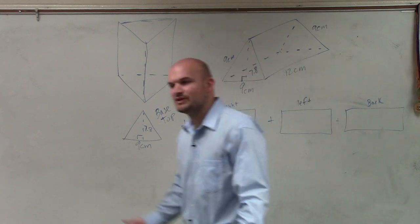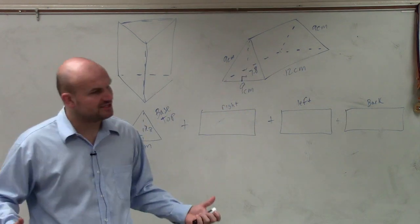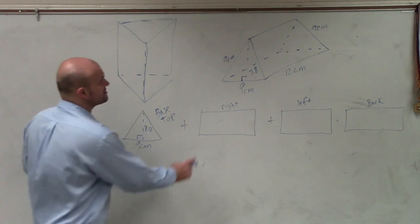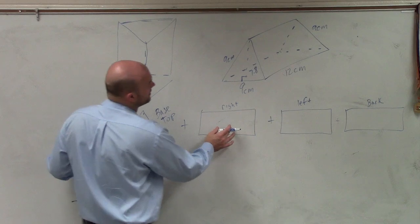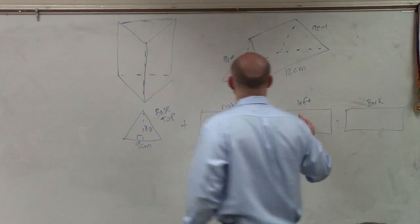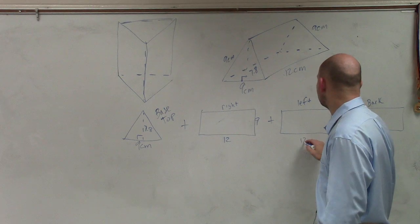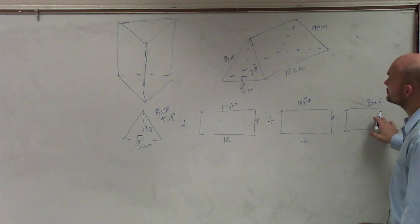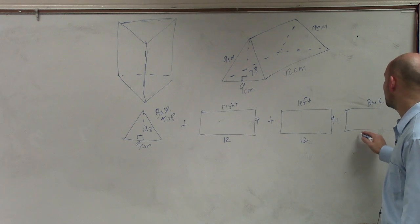All right? Now you guys don't have to do this, but if you're getting confused with finding the area of each and every one, you can just draw simple little drawings like this. Because if you look at this, the right side is going to be 12 by 9 centimeters. The left side is going to be the exact same dimensions, 12 by 9. And then the back is going to be 9 also by 9 by 12.